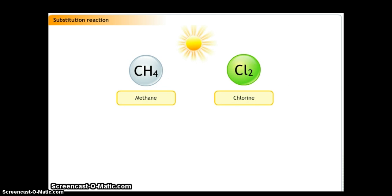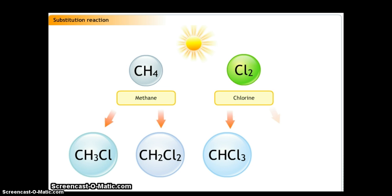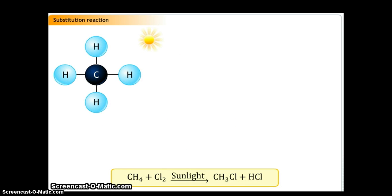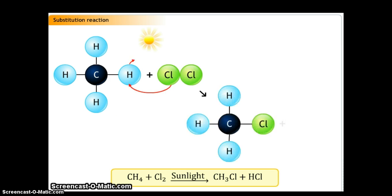When equimolar amounts of methane and chlorine react in the presence of sunlight, then a mixture of chloromethane, dichloromethane, chloroform and carbon tetrachloride is formed. In this reaction, chlorine substitutes the hydrogen atoms one by one.